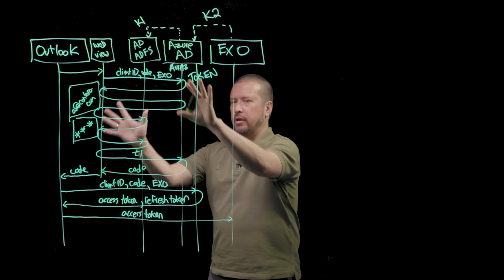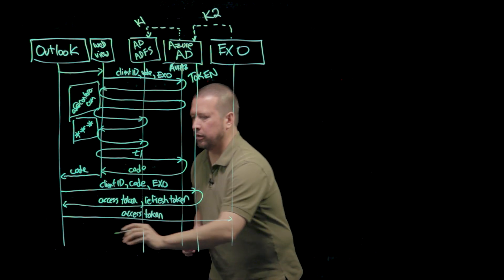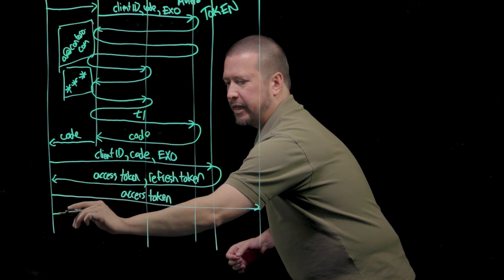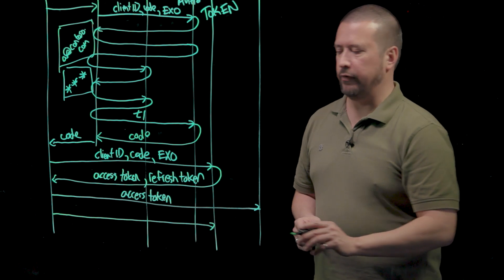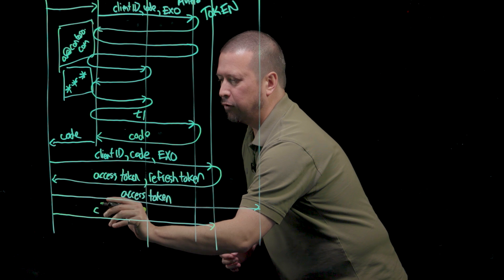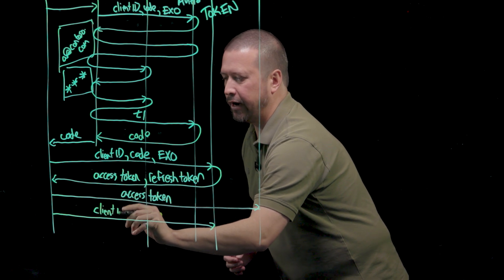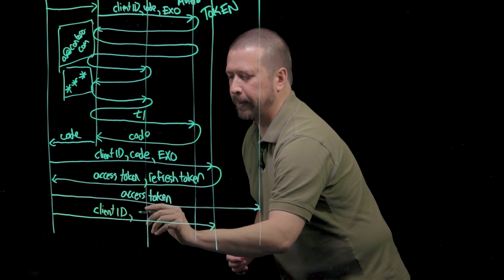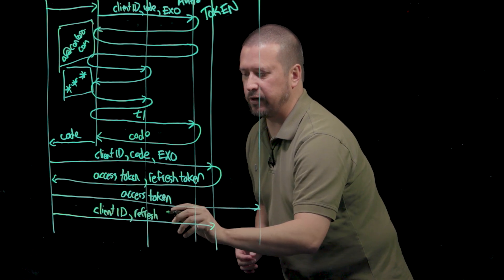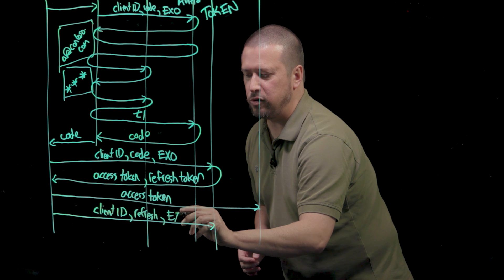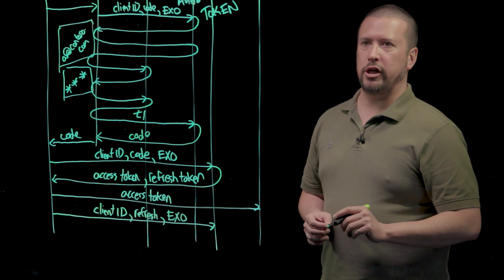We're not going to have to do the interactive authentication again. All Outlook has to do is take that refresh token and send it to the token endpoint of Azure AD again, along with the parameters: I'm Outlook's client ID, here's a refresh token that I received previously, and I want a new access token for Exchange Online.